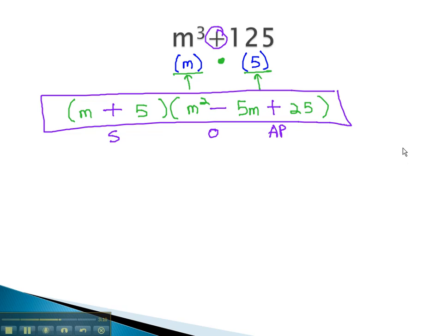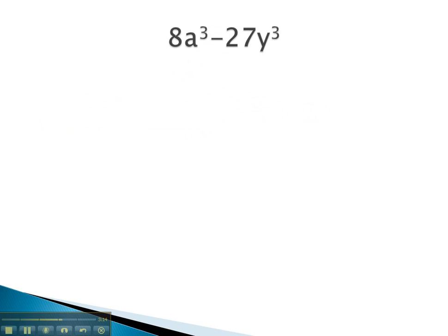Let's try another example, where we factor with cubes. Again, here we have binomials with several cubes. We begin factoring by identifying the cube roots of each. The cube root of 8a³ is 2a, because 2³ is 8. The cube root of 27y³ is 3y, because 3³ is 27.